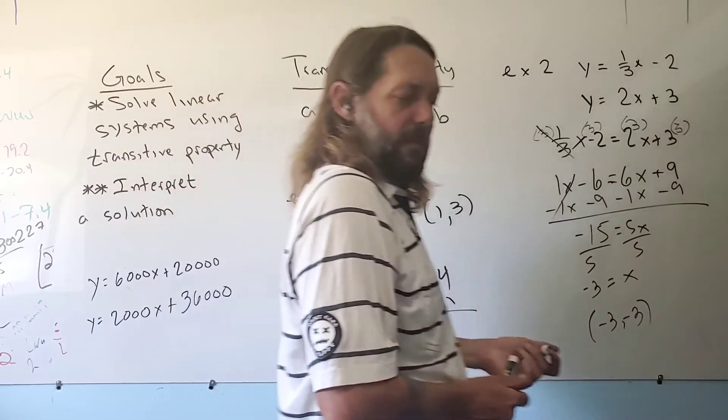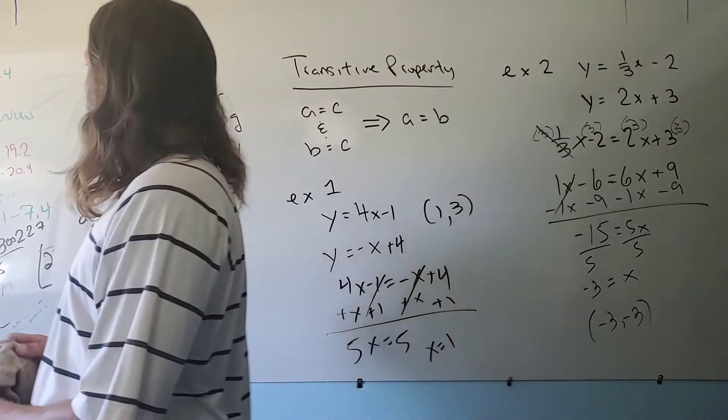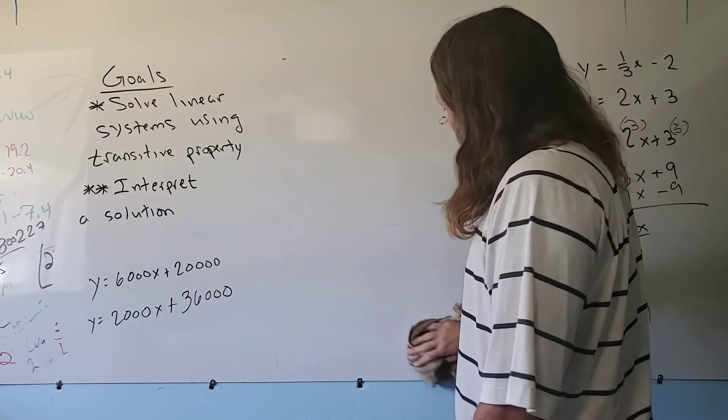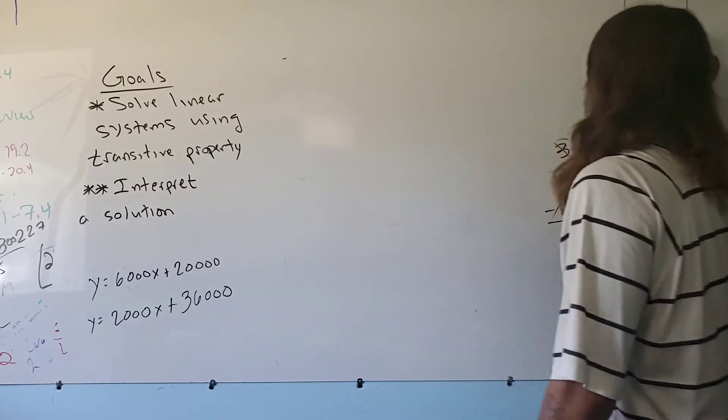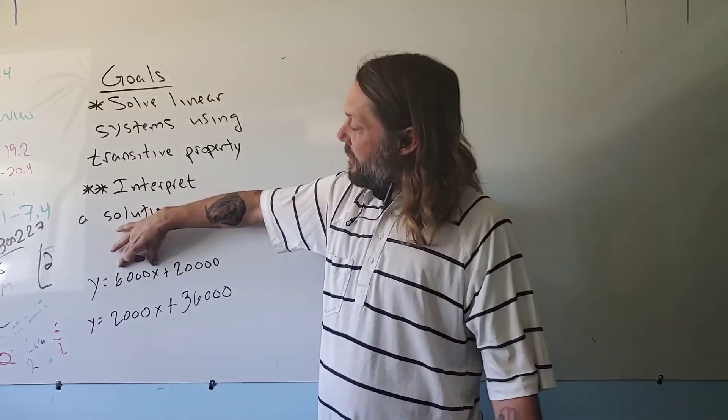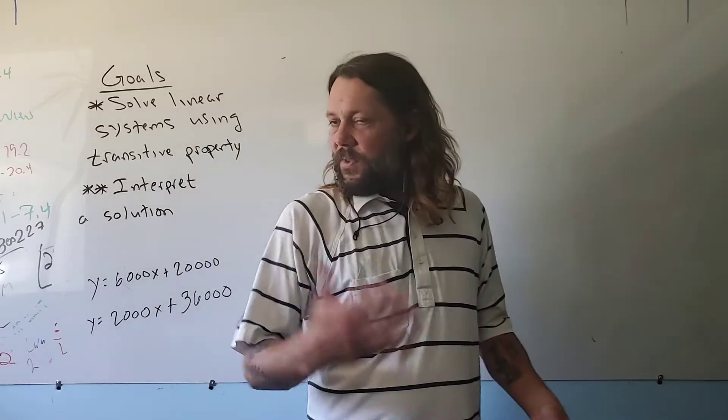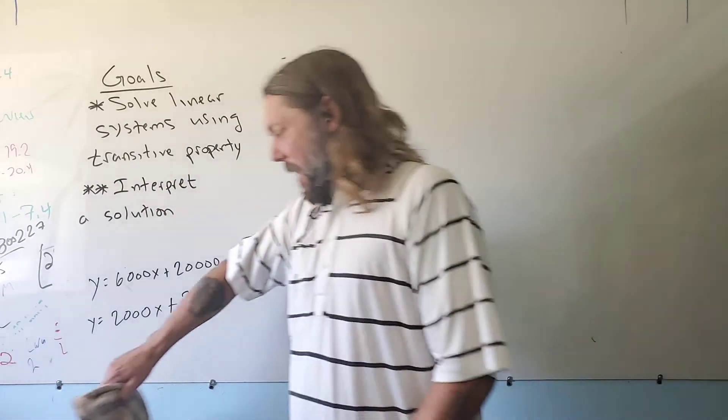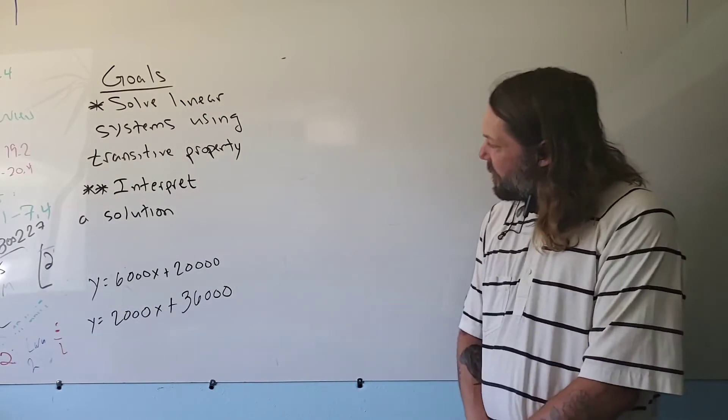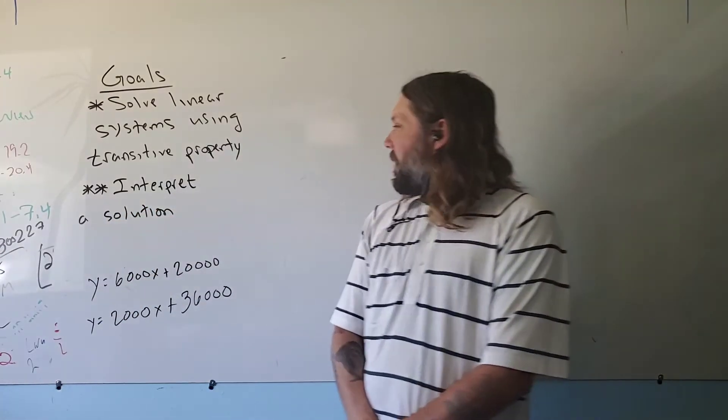Now, the next problem, I wrote down the equations. It's a situation that some of you might experience when you're older. You're going to have the opportunity to choose between two jobs. One job pays you $20,000 a year and $6,000 an annual increase in your salary. The other job starts you off at a higher amount, $36,000, and then you only get a $2,000 raise. These equations represent your salaries. X is the number of years you've worked at your job. Y is how much you've made at that particular year.